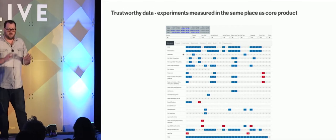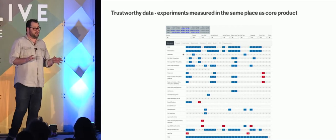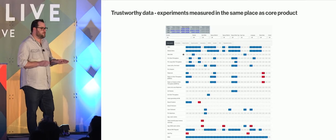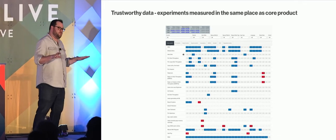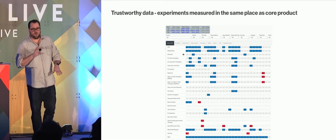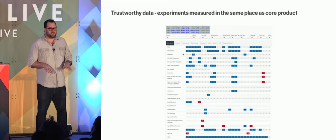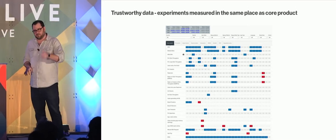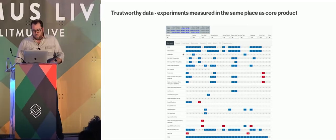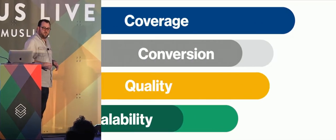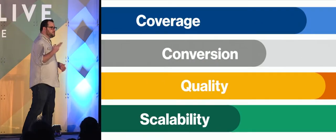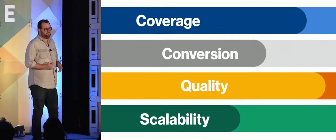You'll see a few screenshots of this experimentation dashboard throughout the presentation. Blue is statistically significant positive. Gray is neutral — we don't know about it. And red is negative. When we think about what we want to experiment on, we apply four principles: coverage, conversion, quality, and scalability.